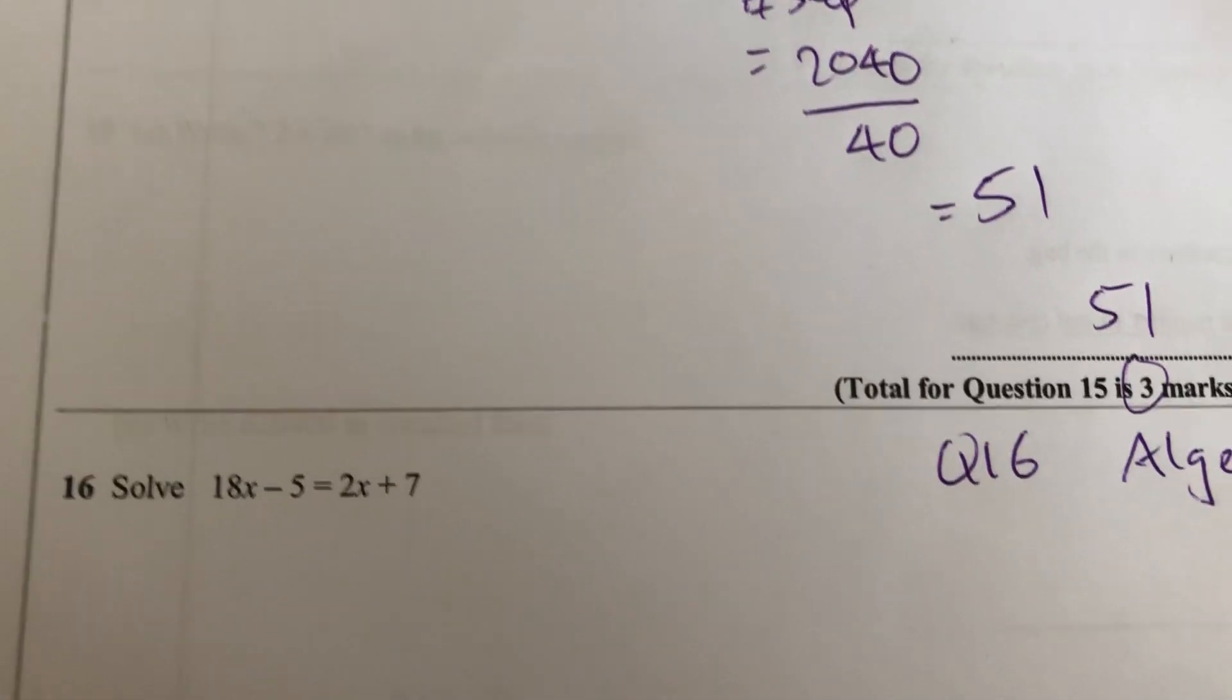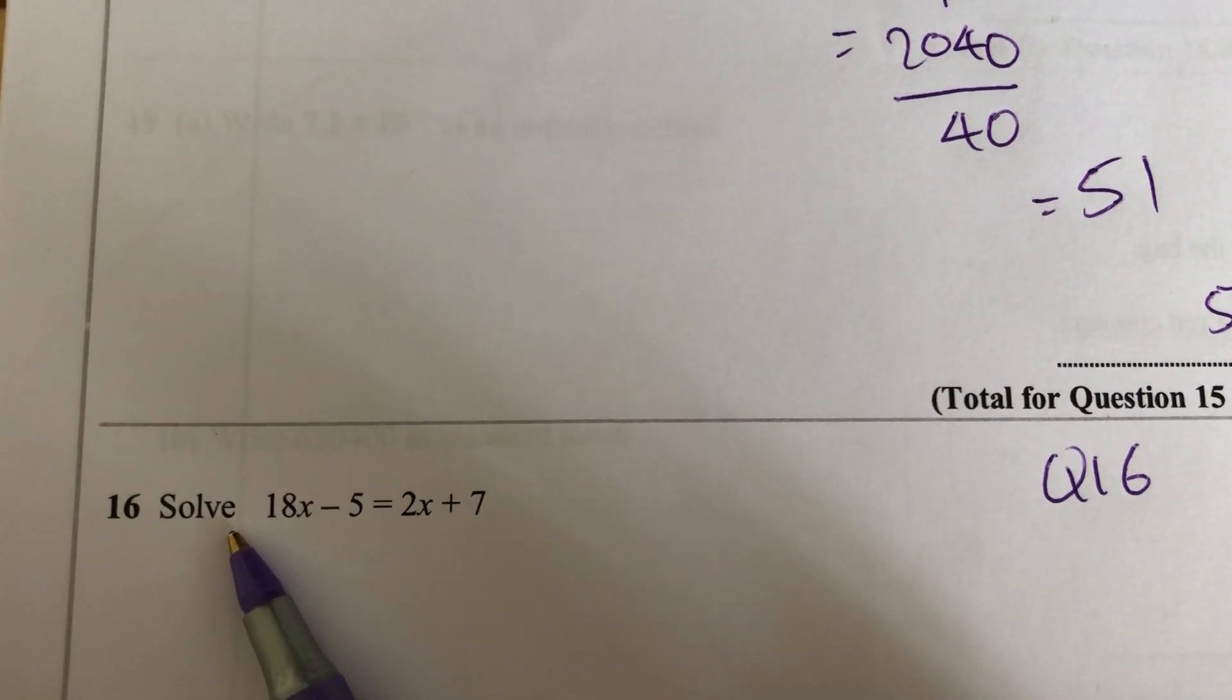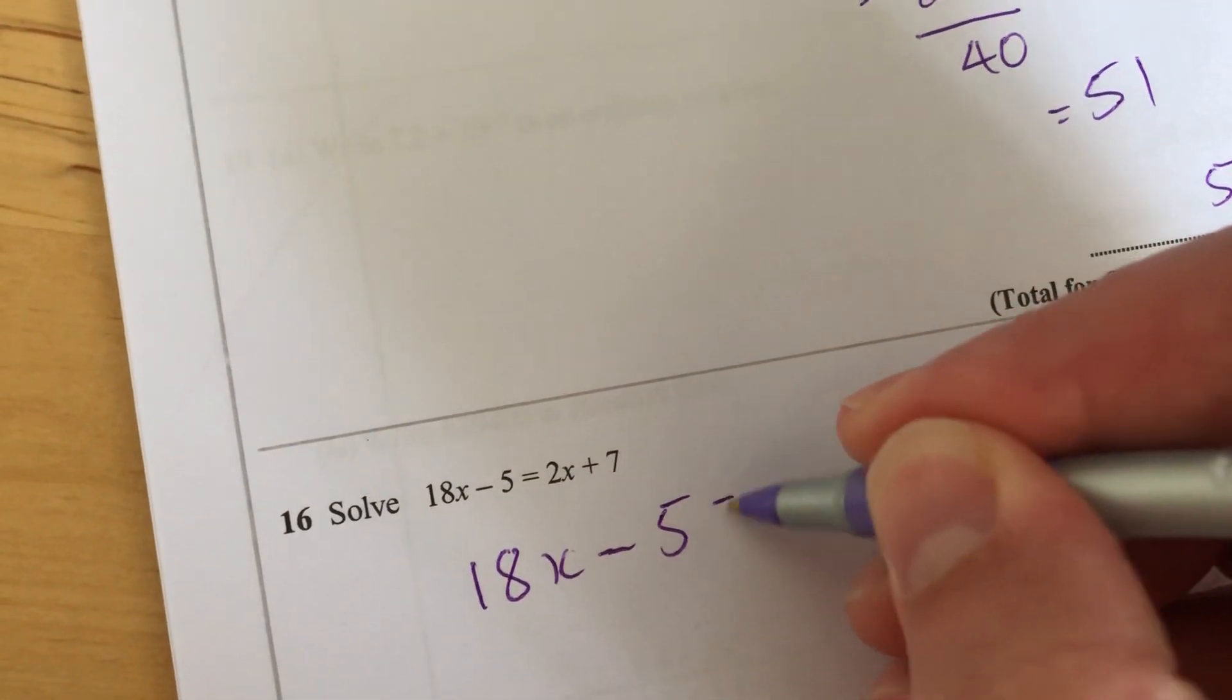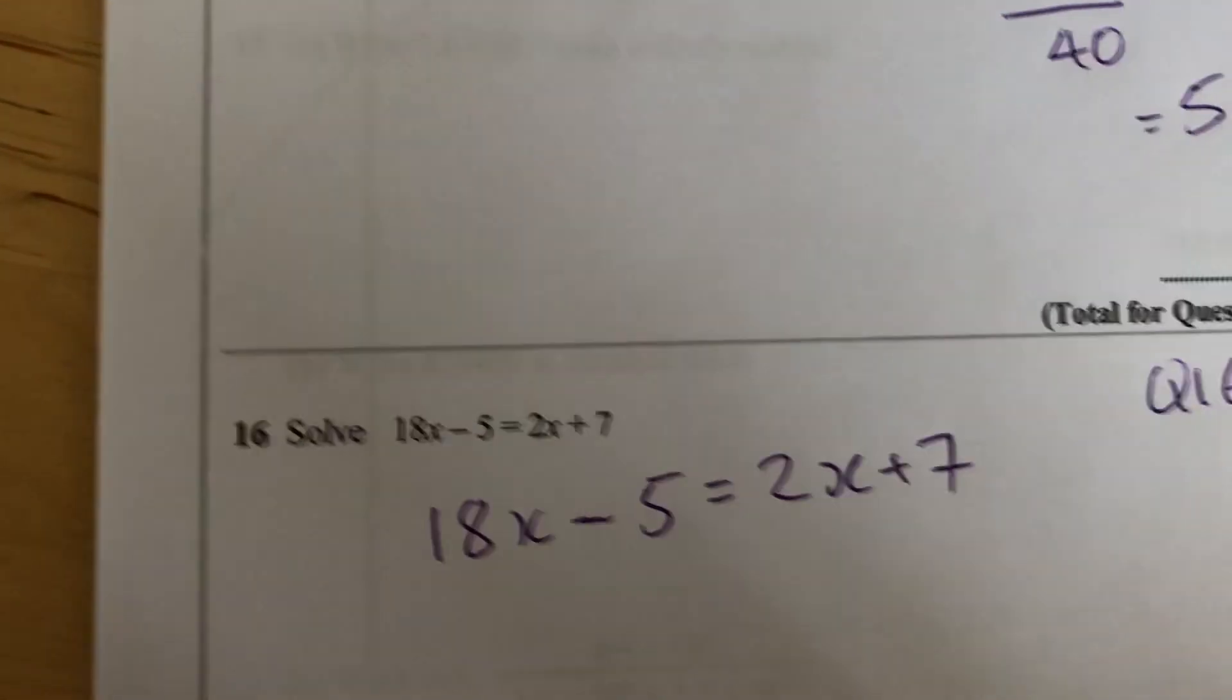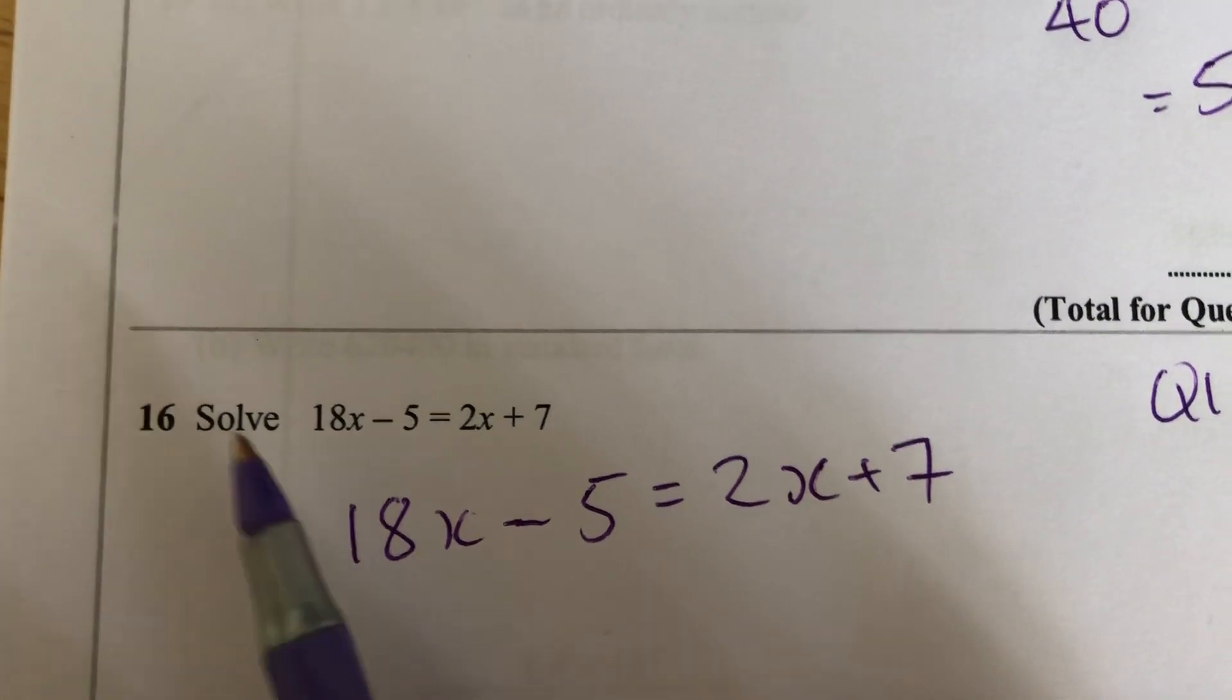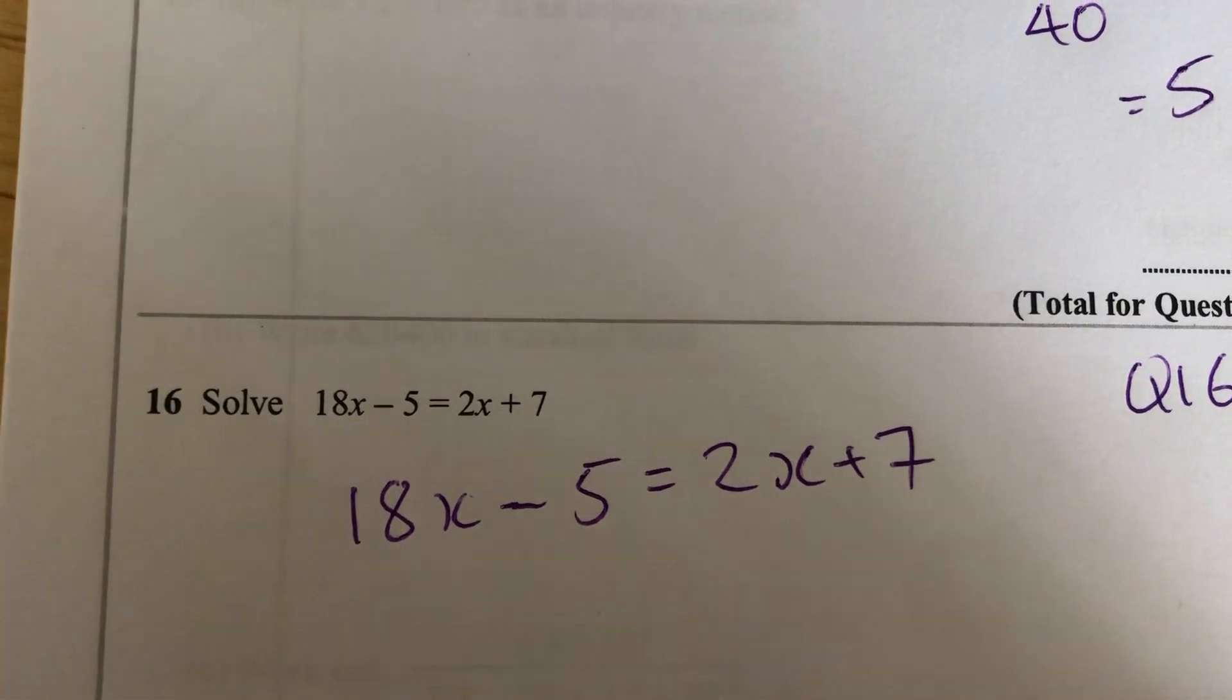Let's continue on to the next question, because it's algebra, and I always find these algebra ones quite straightforward, because I don't have to do a lot of reading. I've just got to solve for x. 18x minus 5 equal to 2x plus 7. And this is the kind of question that I like in an exam, because I just have to compute it. I don't have to comprehend it in a sense, I just have to solve. So I'm going to use opposite operations on balance method.